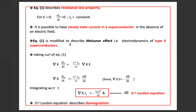Equation 1 is then modified to describe the Meissner effect and the electrodynamics of type 2 superconductors. Taking the curl of equation 1: del cross dJs/dt equals e² Ns upon m times del cross E. Since del cross E equals minus dB/dt, this reduces to del cross dJs/dt equals minus e² Ns/m times dB/dt. Integrating with respect to time gives del cross Js equals minus Ns e² upon m times B. This is the second London equation, which describes diamagnetism.